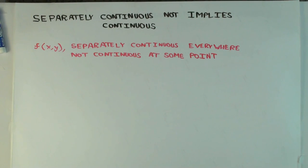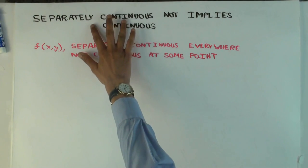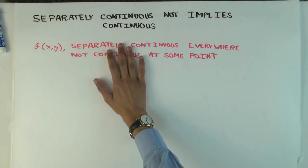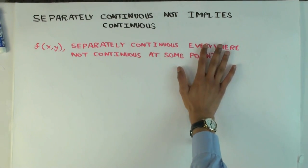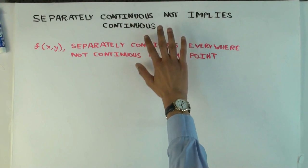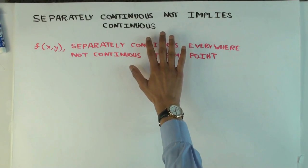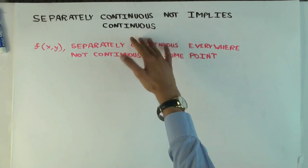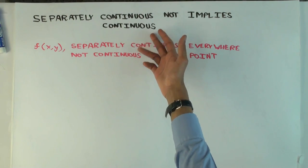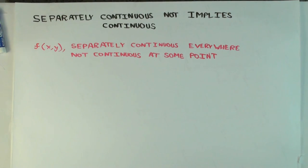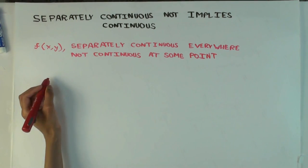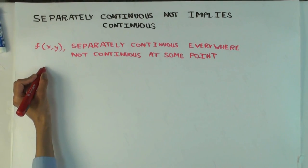In this talk, I'm going to give an example of a function of two variables which is separately continuous — continuous with respect to each variable individually everywhere — but there's some point where it's not continuous. That is, it's not jointly continuous, so it's not continuous in the usual sense of the word at some point. Let me take the example I'm interested in, and I'll explain what's going on behind that.